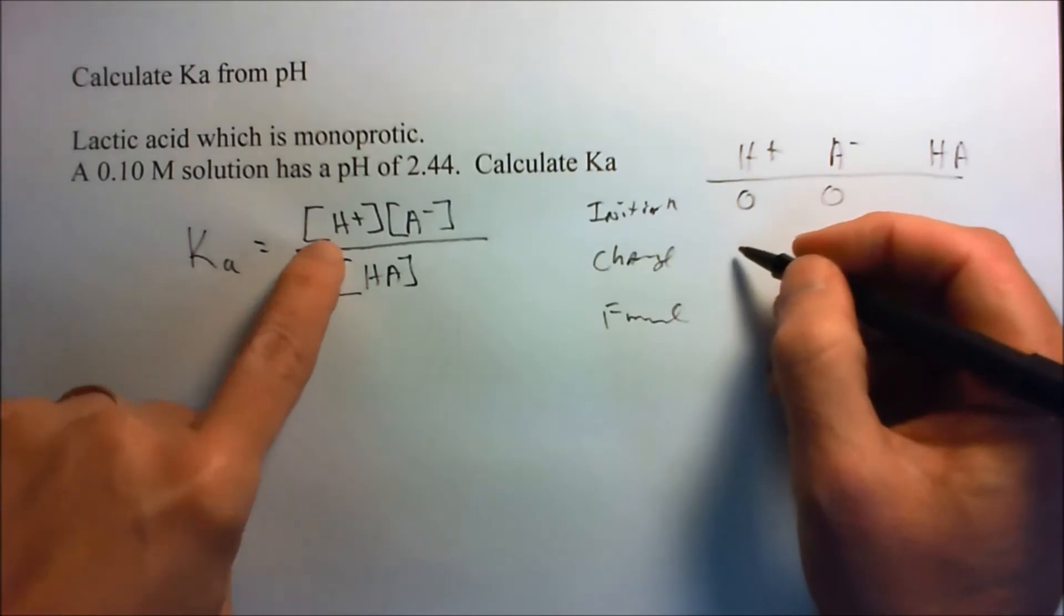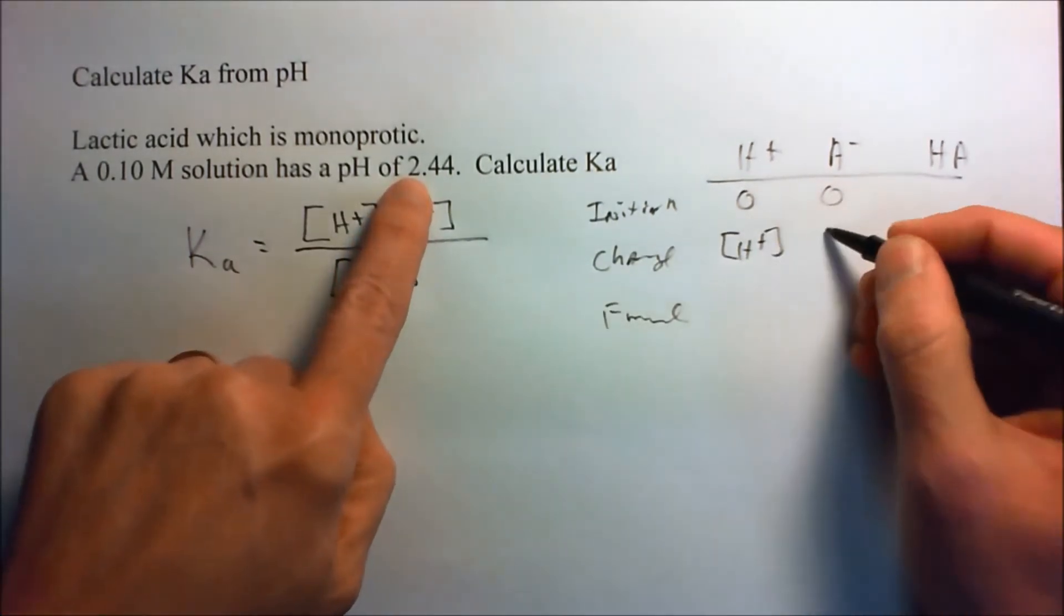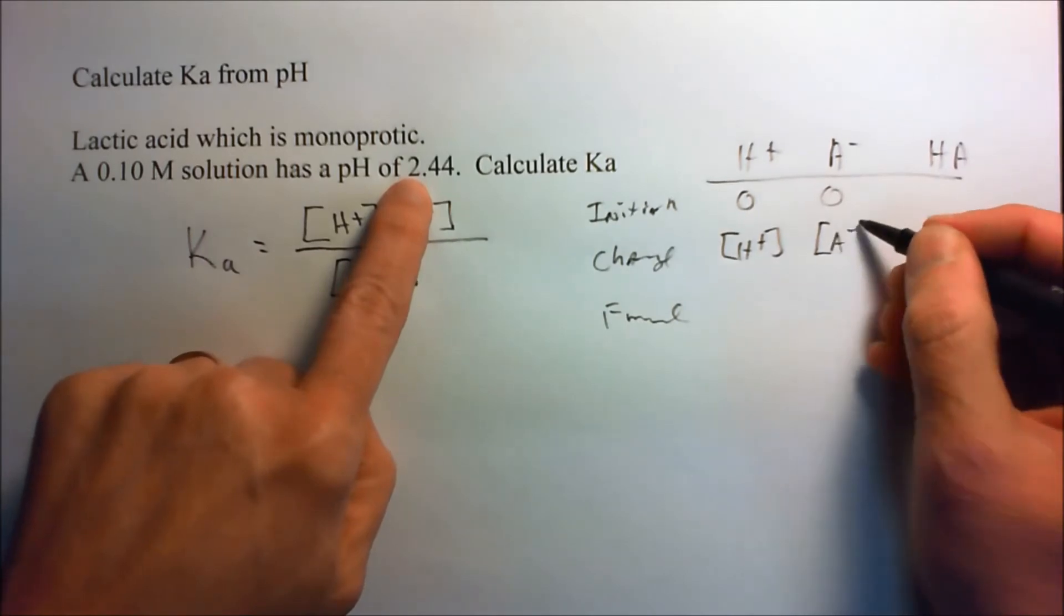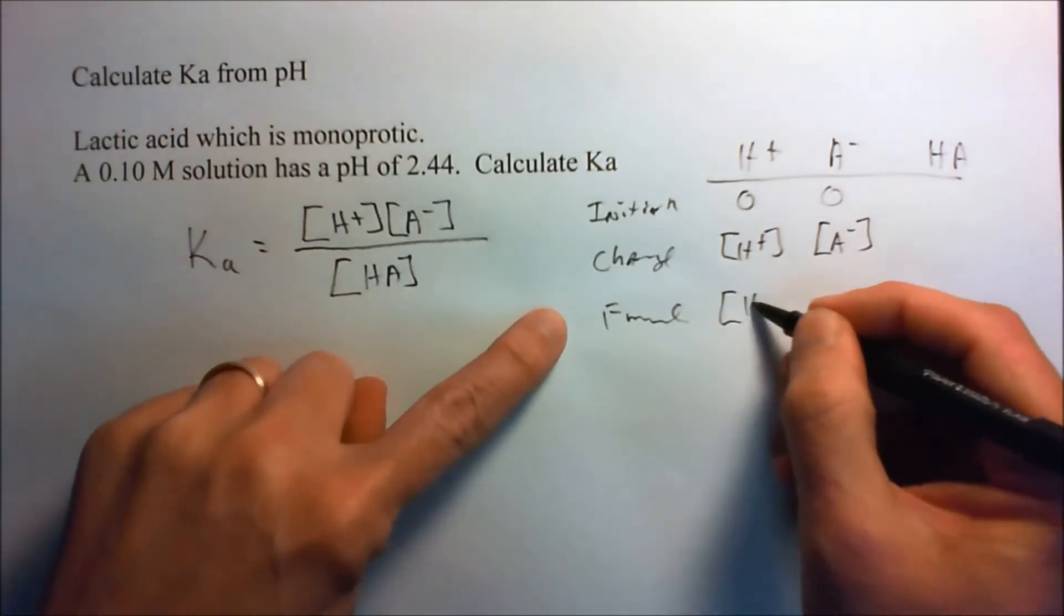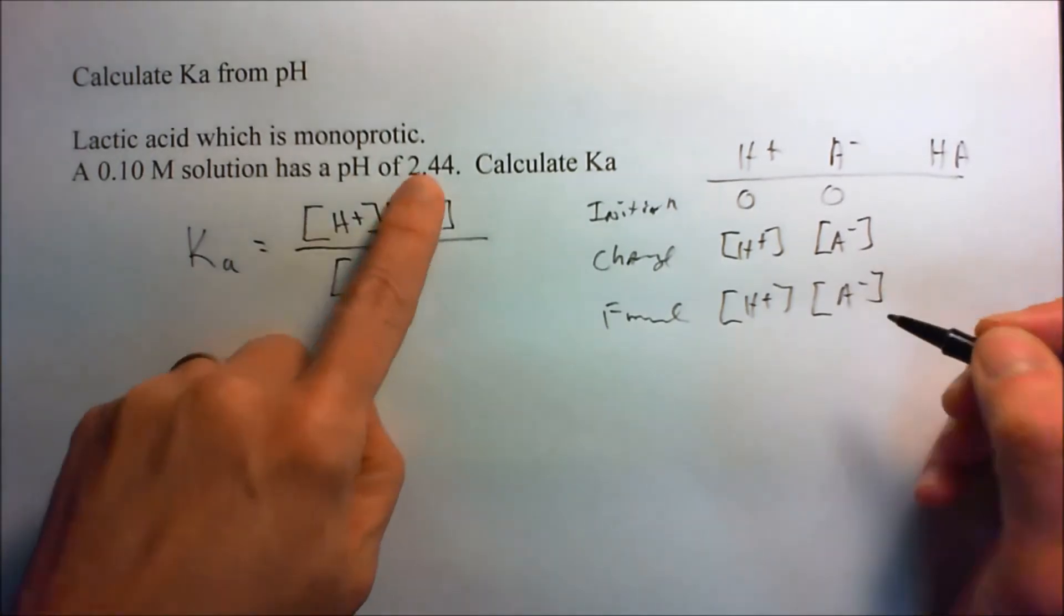Our change would be our final concentration, which is given by our pH. And our final would be the concentrations given by the pH.